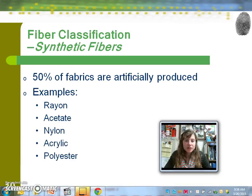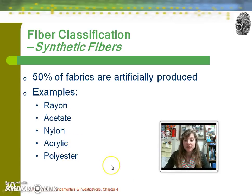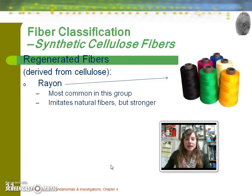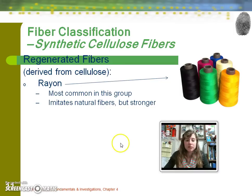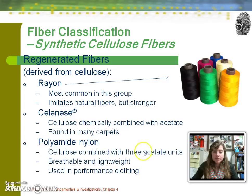Part two: synthetic fibers. 50% of fabrics are currently artificially produced. You may have heard of these or seen some on the tag of your clothing. The first category is synthetic cellulose fibers — these are regenerated from naturally occurring cellulose, so they are plant-based. That includes rayon, Celanese, which is a commercial name for that product, and polyamide nylon, used in performance clothing.